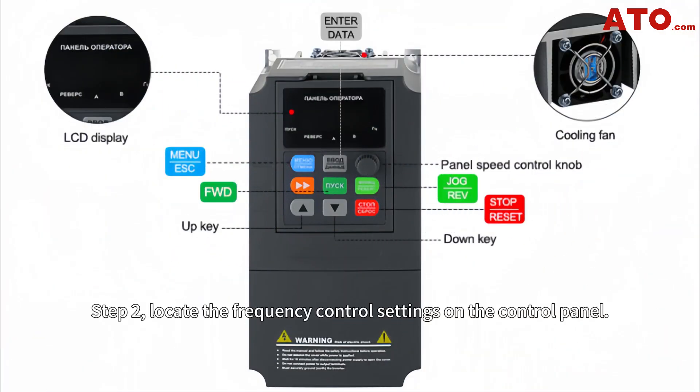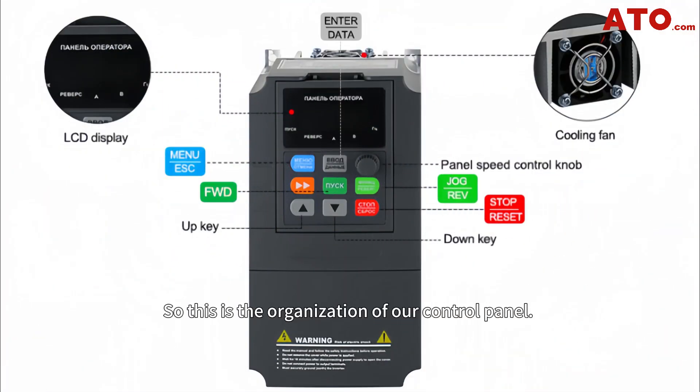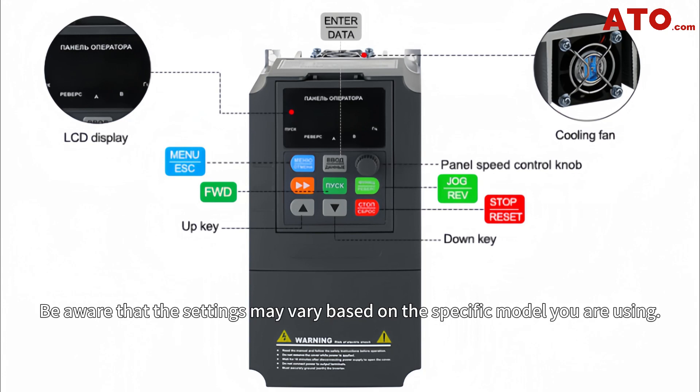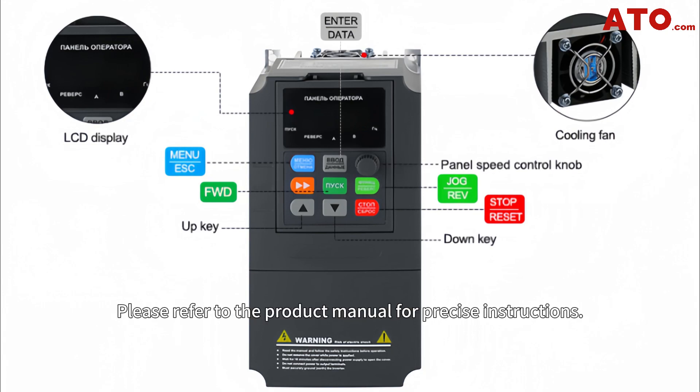Step 2. Locate the frequency control settings on the control panel. This is the organization of our control panel. Be aware that the settings may vary based on the specific model you're using. Please refer to the product menu for precise instructions.